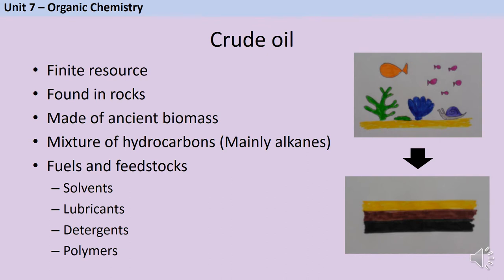Crude oil is a mixture of compounds called hydrocarbons, mainly of a class called alkanes. These different alkanes are useful as fuels like diesel and petrol and as feedstocks which are raw materials used to supply industrial processes. They're used to make solvents, lubricants, detergents and also polymers like polyethene.